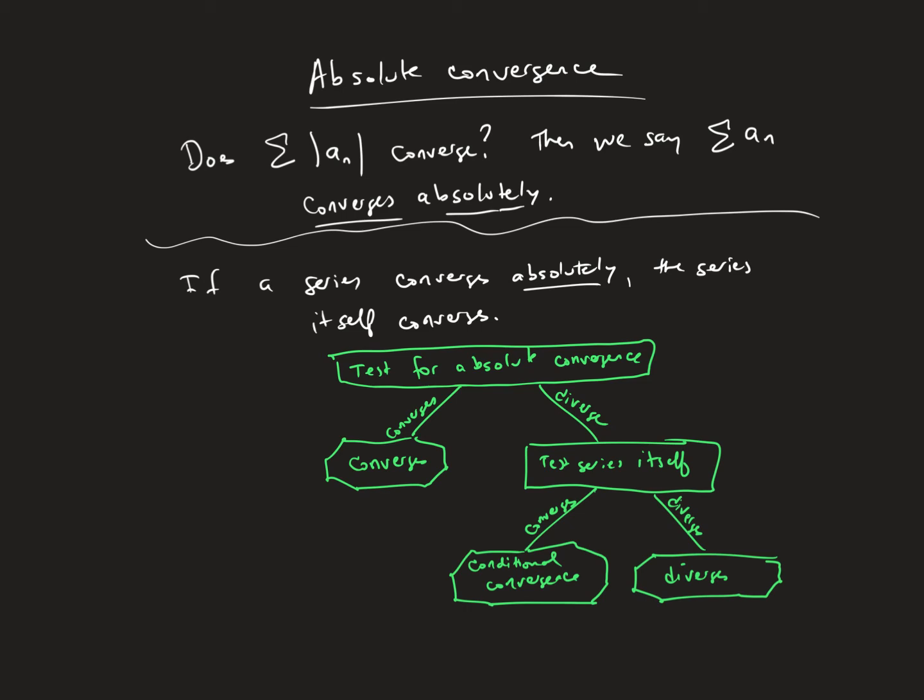So you test for absolute convergence first. If it works and it converges, then the series converges absolutely. If it doesn't, you test the series itself. And then if that converges, it's conditional convergence. It converges conditionally. If it diverges, it's divergent.